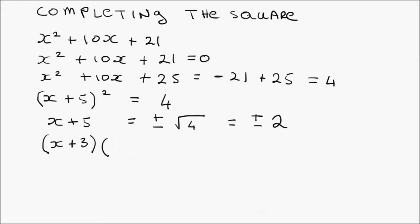The other factor is x plus 5 equals minus 2. We bring the negative 2 across and that gives us 7. So the quadratic x squared plus 10x plus 21 factors as x plus 3 times x plus 7. Checking: x by x is x squared, 3x plus 7x is 10x, and 3 by 7 is 21.